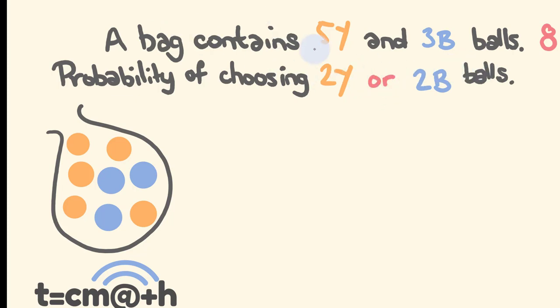Now you're going to see the key difference here — this word 'or'. Instead of multiplying, this means what we're going to be doing is adding.